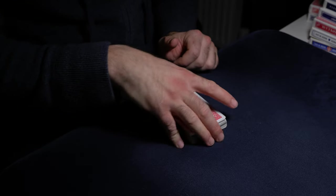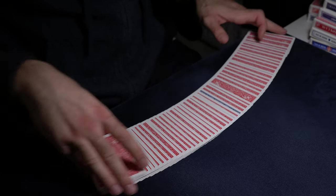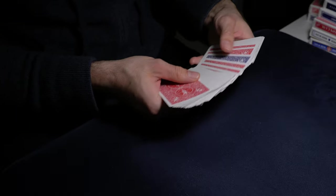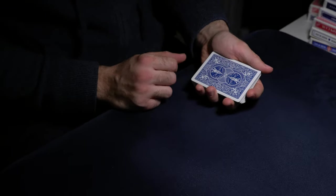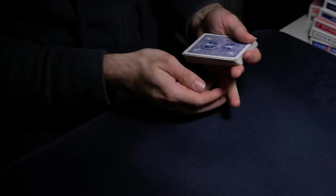Then you can reveal it in whichever way you want. You can either spread it on the table or go through your hands. It really doesn't matter. As soon as you get to the blue card you cut all the cards above it to the bottom.